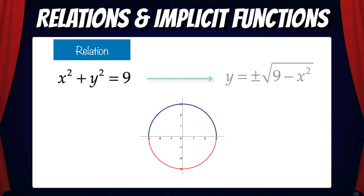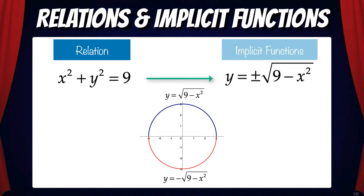But we can solve for y, and when we do that we get y equals plus or minus the square root of 9 minus x squared. Each separate equation is a function. The positive square root function is the top half of the circle, and the negative square root function is the lower half of the circle. Together, these are the implicit functions of the relation x squared plus y squared equals 9 — they are the functions implied through this relation, even when not expressed explicitly.